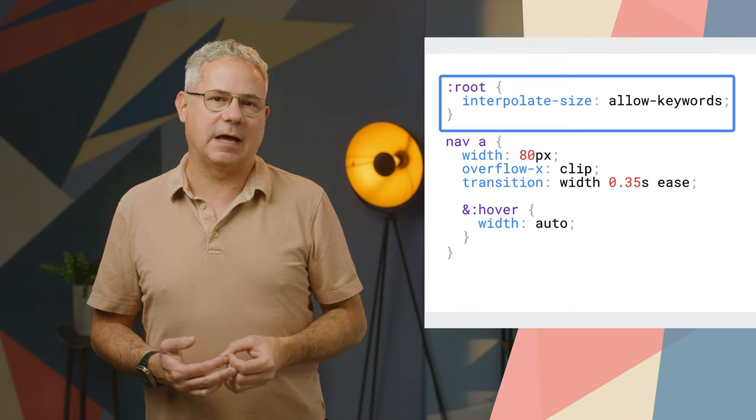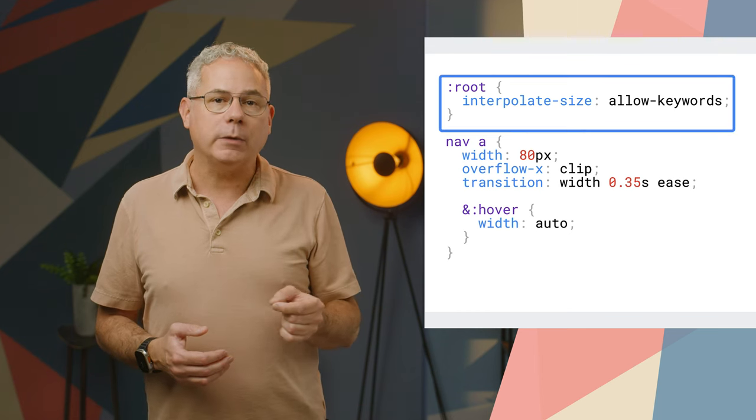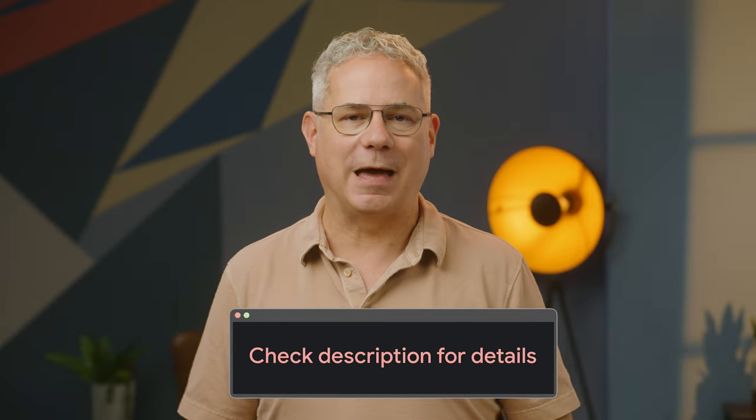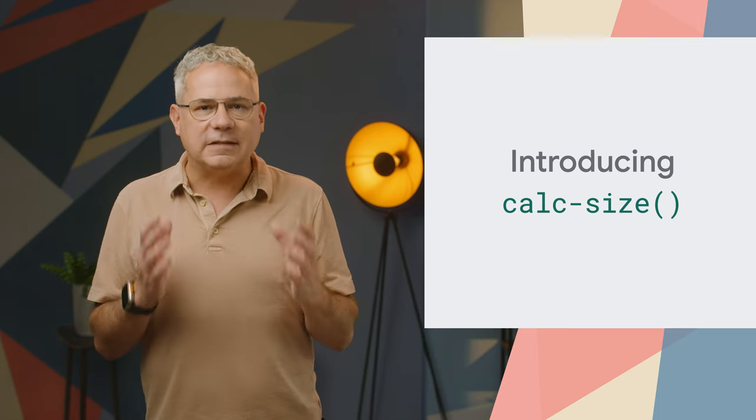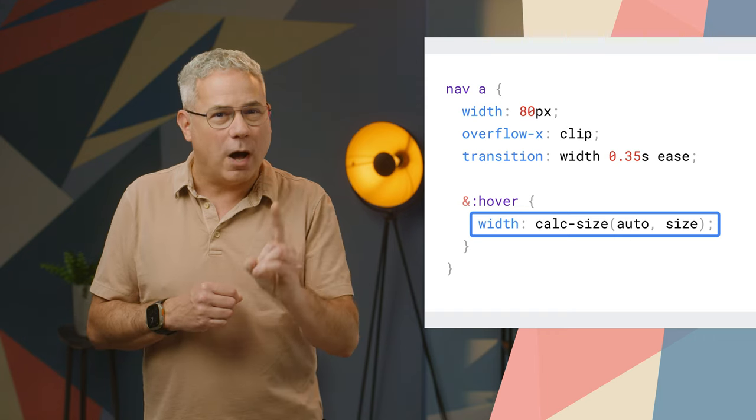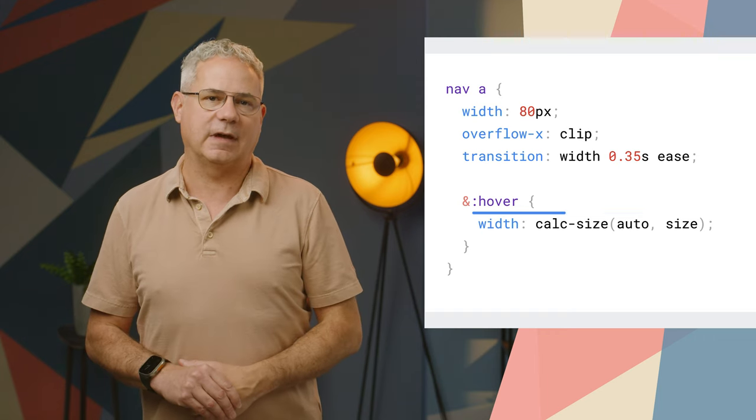Specifying interpolate-size allow-keywords on the root element sets the new behavior for the entire page. We suggest doing this whenever compatibility isn't an issue. For finer control, the CSS calc-size function, similar to calc, also supports operations on exactly one of the supported intrinsic sizing keywords.